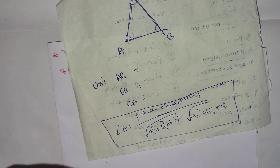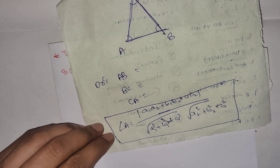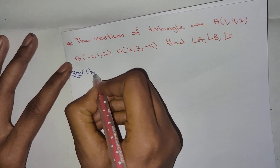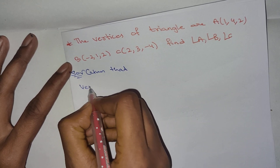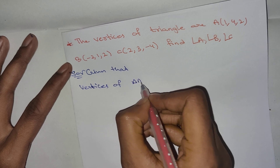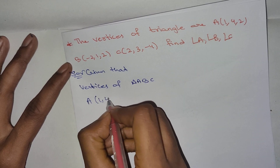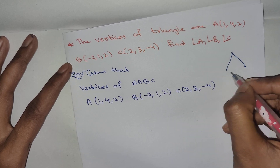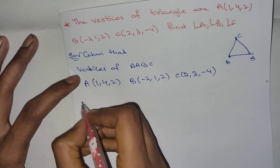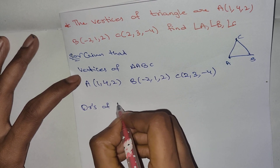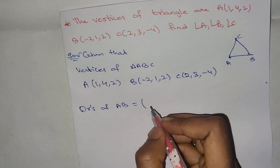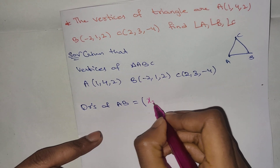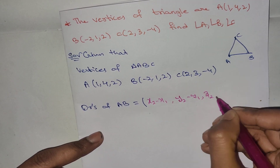Let's apply this to the problem. The vertices of the triangle are A, B, C. The direction ratios of AB — from point A to point B — are x2 minus x1, y2 minus y1, z2 minus z1. This is the formula.